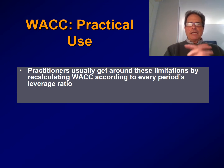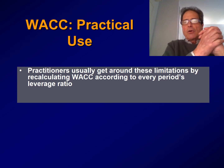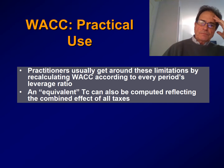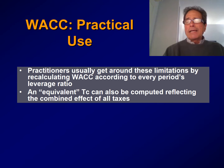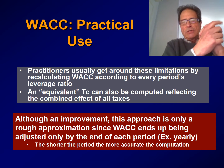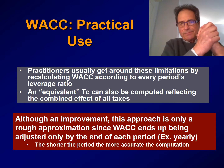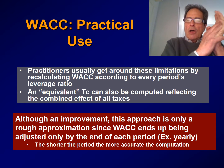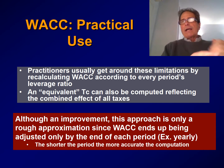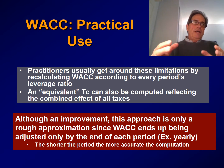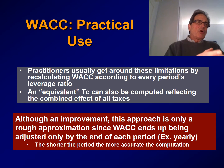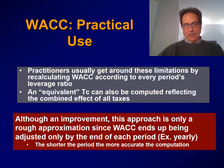Practitioners usually get around these limitations, at least partially, by recalculating WACC according to every period's leverage ratio. Also, when there are other tax effects related to the debt, different from the simple corporate tax rate, you can incorporate other tax effects by calculating a kind of average tax rate. Although this is an improvement, this approach is only an approximation, since WACC ends up being adjusted only at the end of each period — usually a year — and actually the changes take place throughout the year. So rigorously, WACC would have to be adjusted much more frequently in order to alleviate these limitations in a significant way.